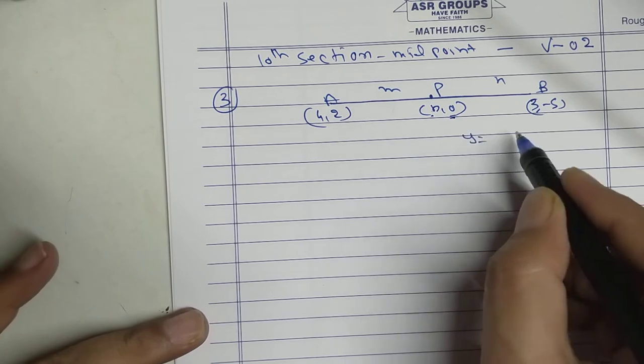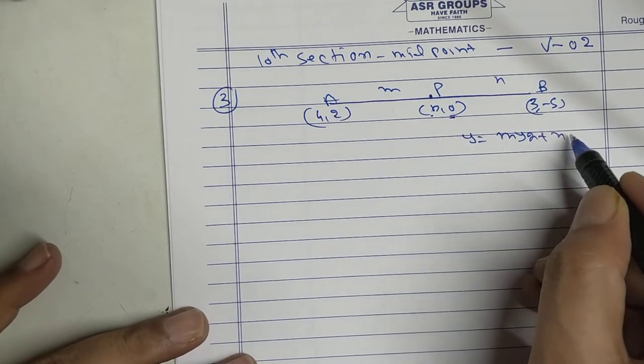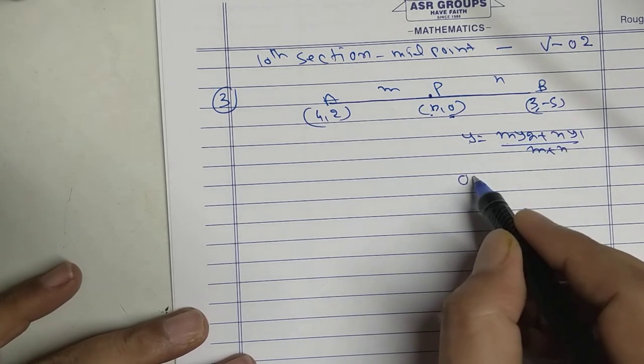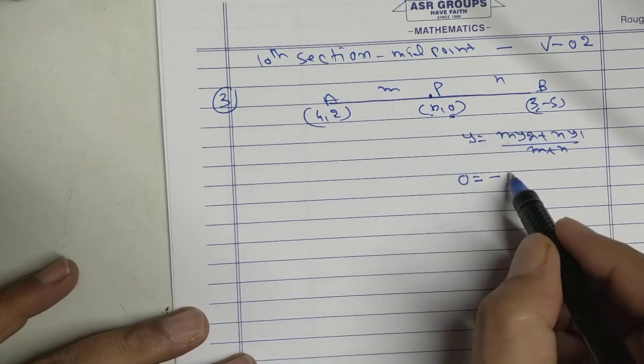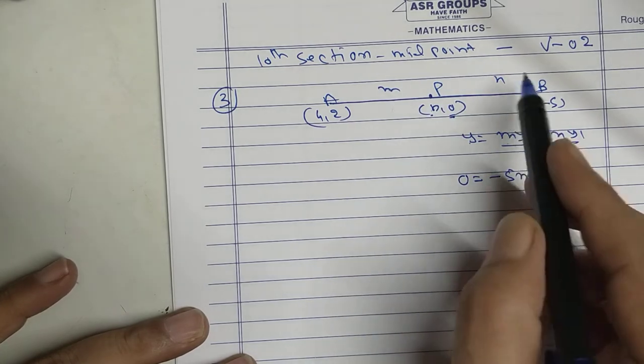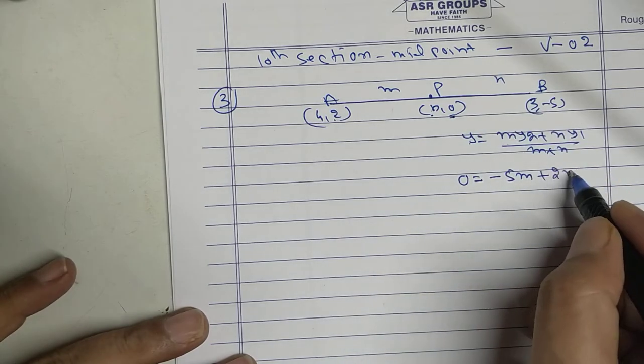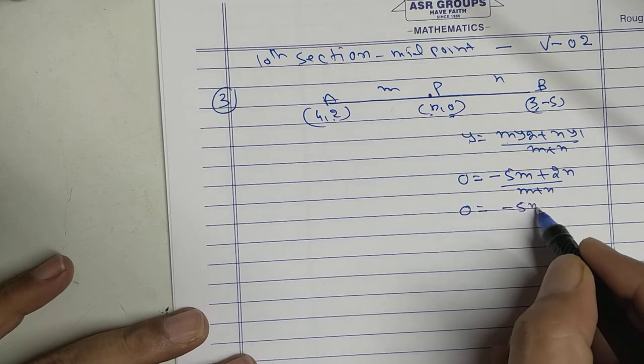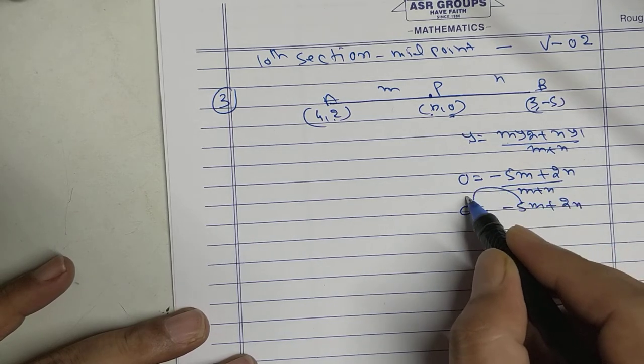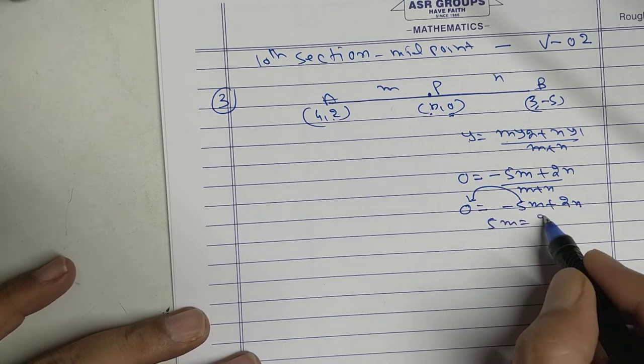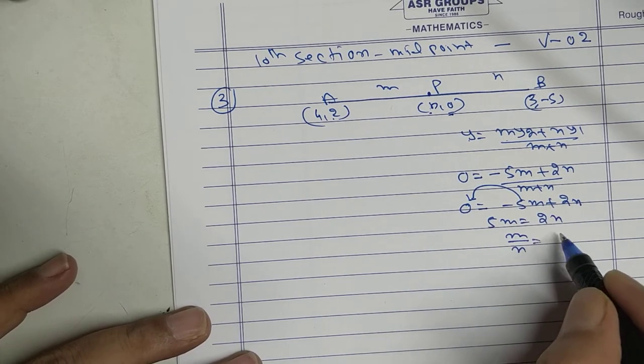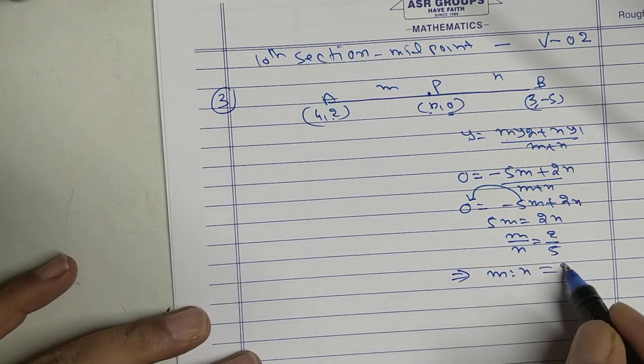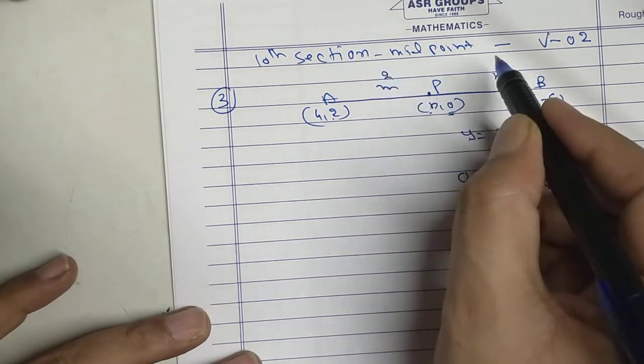So use y equal to my2 plus n y1 upon m plus n. y is 0. My2 minus 5m plus n y1 2 plus 2n upon m plus n. 0 equal to minus 5m plus 2n. Bring minus 5 here. 5m equal to 2n. M upon n equal to 2 upon 5. I got the ratio. M is to n equal to 2 is to 5.